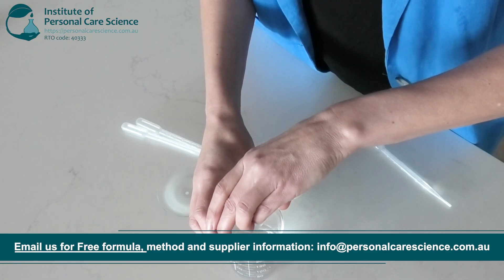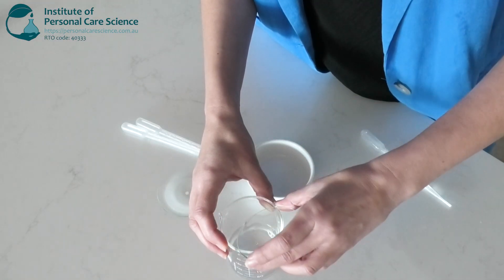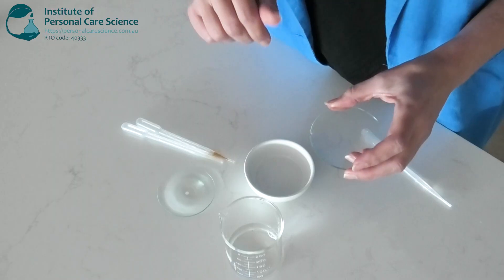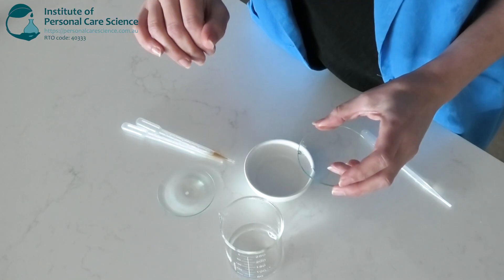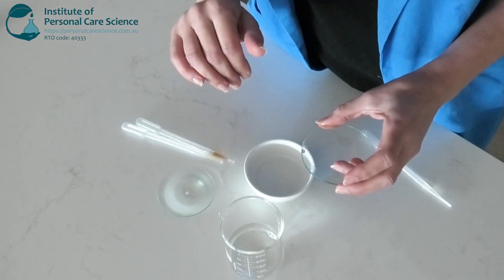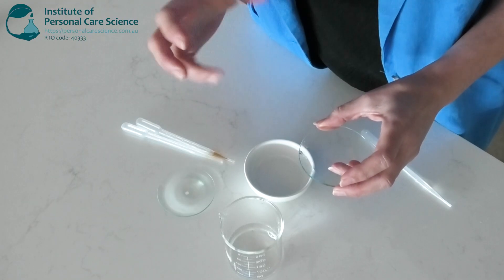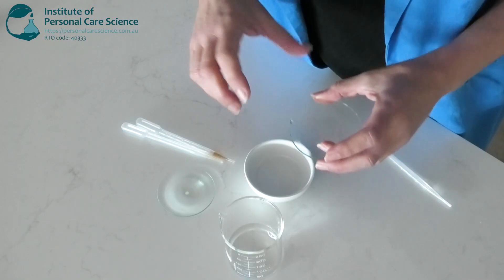Propane diol is a humectant which attracts moisture to the skin without any heaviness like glycerin often gives. Organic propane diol is non-comedogenic so you won't need to worry about it clogging your pores. It also feels really lightweight and silky on the skin.